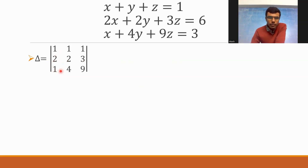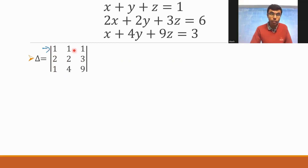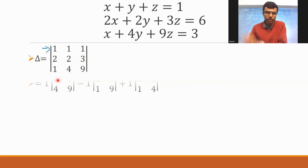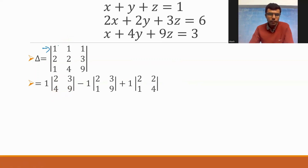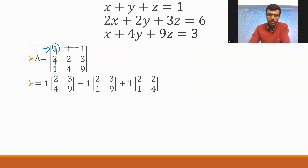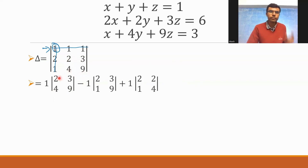Now this determinant — I'm going to expand it along row one. In row one there are three elements: one, one, and one. For the first element, strike off the row and column in which the first element is located. The first element is in the first row and first column. If you strike it out, what I'm left with is 2, 3, 4, 9. That's why I got the determinant of 2, 3, 4, 9 here.